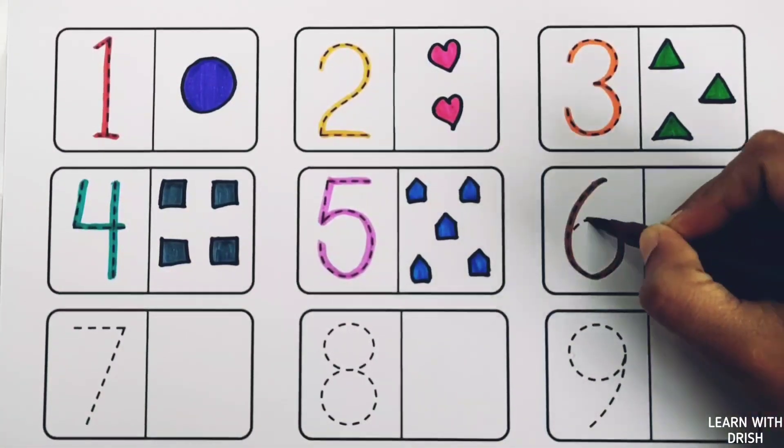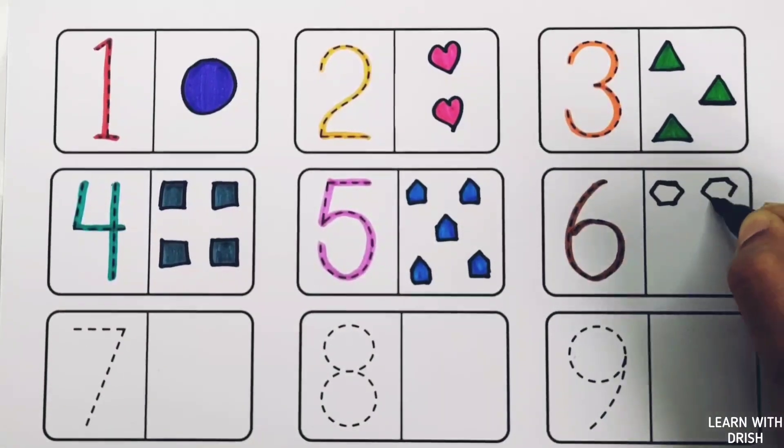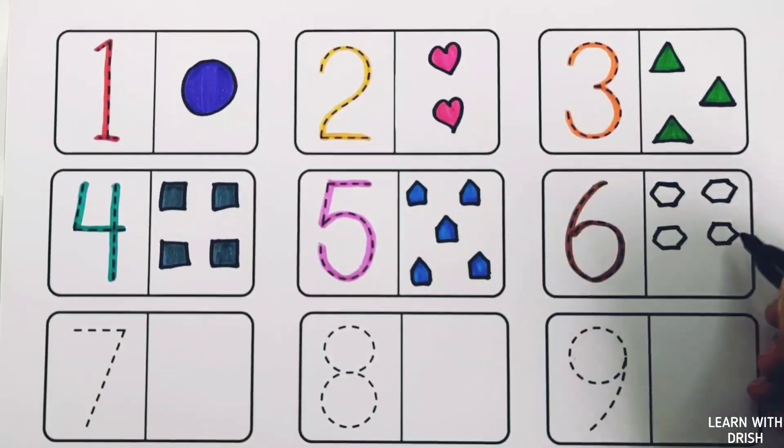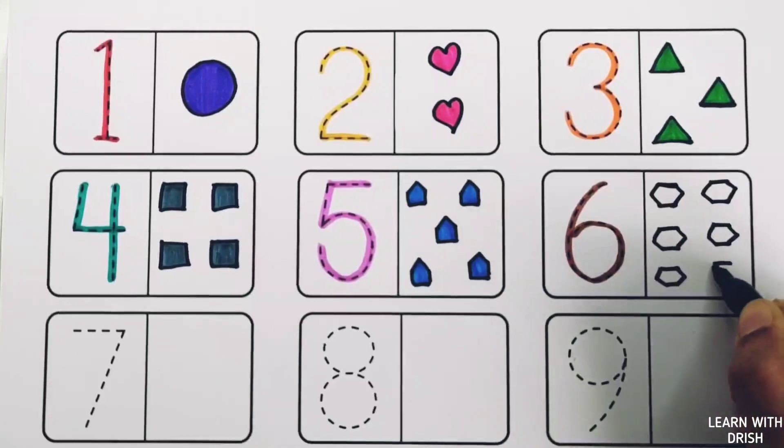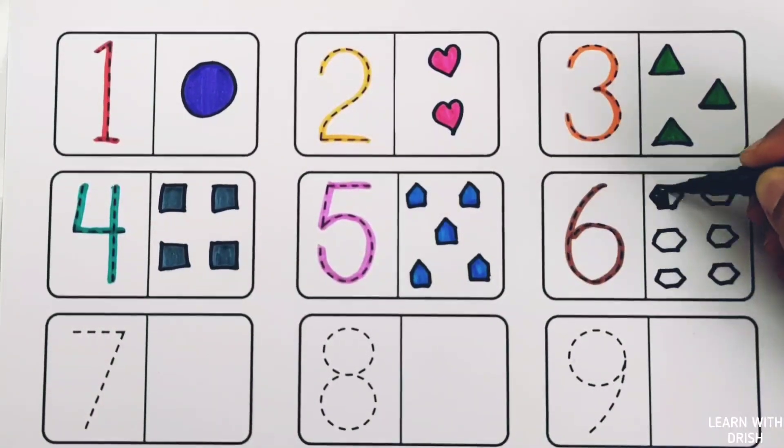Number six. One, two, three, four, five, six. Six hexagons, green color.